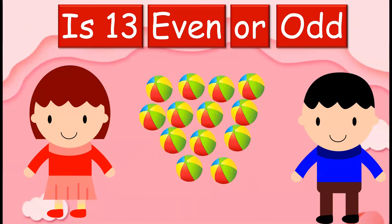Now let's see if 13 is an even number or an odd number. So before that we will have to count on the balls and we will make them as partners. 1, 2, 3, 4, 5, 6, 7, 8, 9, 10, 11, 12, 13. So there are 13 balls.